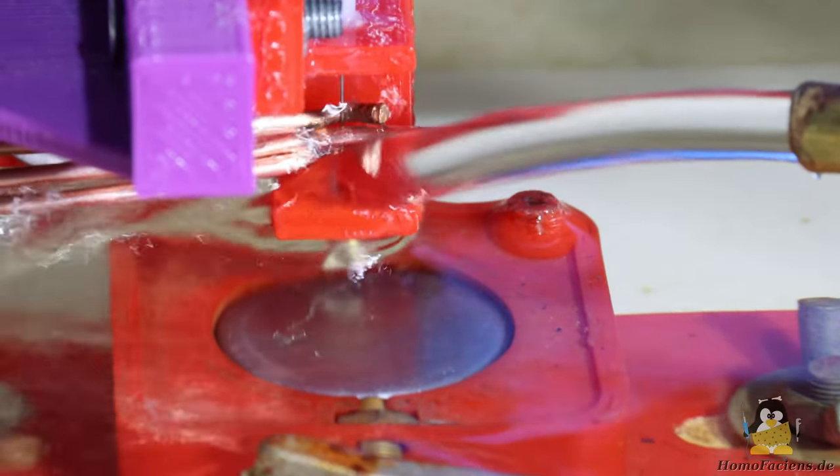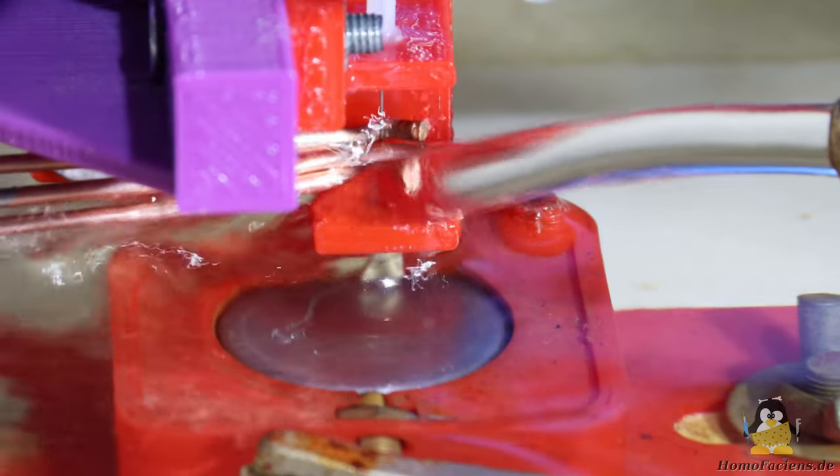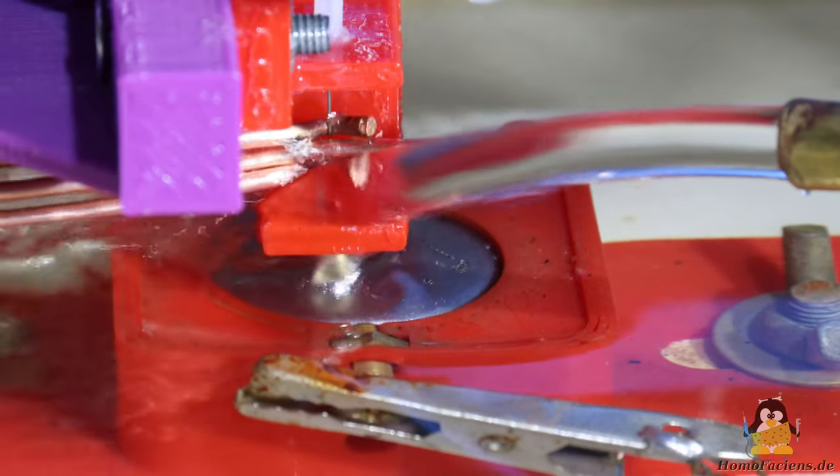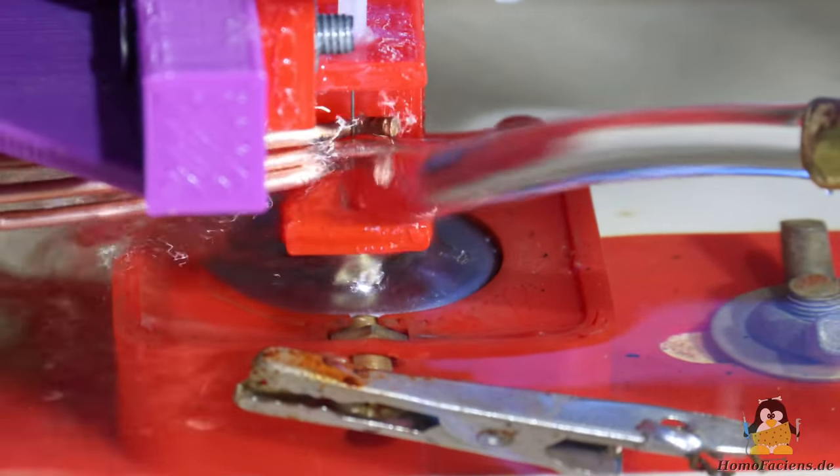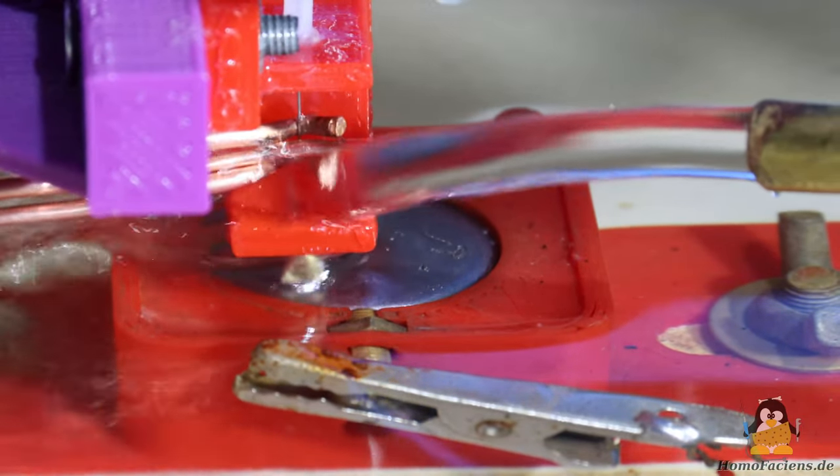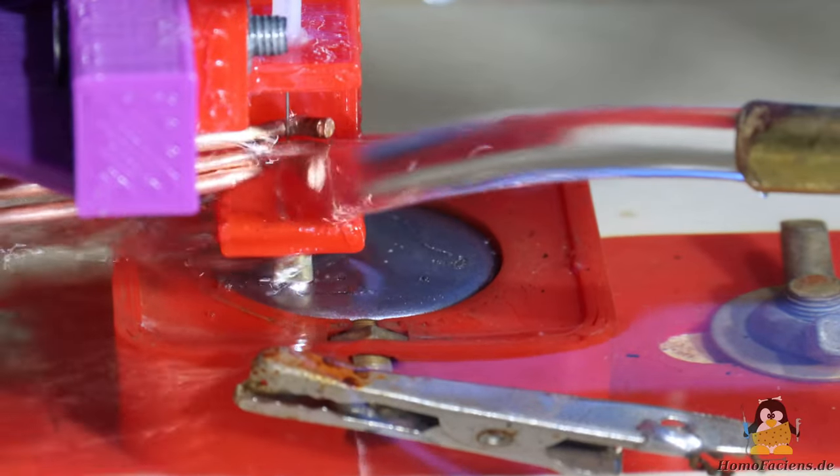As you can see, the engraving process works fine. However, the wire sometimes sticks to the workpiece. The tip of the tungsten wire welds to the steel disc.